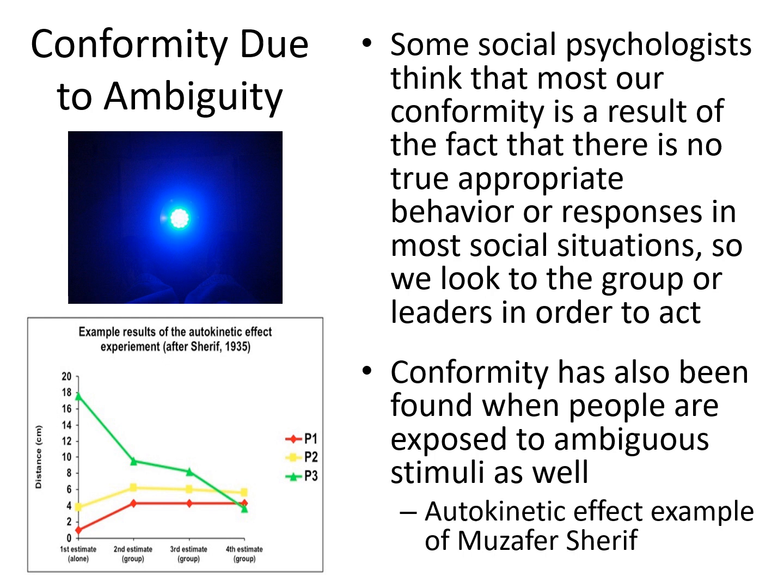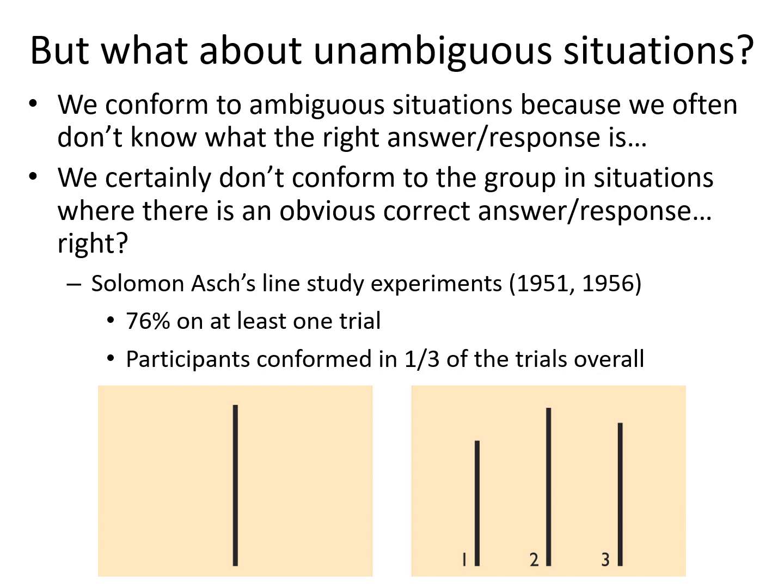For a long time we assumed that it was. Then about a decade after Sherif ran this study, another researcher challenged this notion. This gentleman's name was Solomon Asch, and what he did to determine whether or not we conform in not just ambiguous situations but what he called unambiguous ones was design a very classic study often cited in most introductory and social psychology classes. We call these his line study experiments. He used a very simple apparatus to show that sometimes we might conform in situations where there really is an obvious answer.